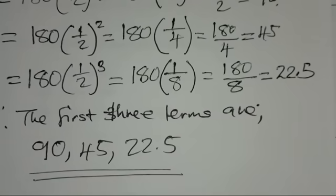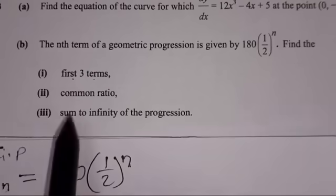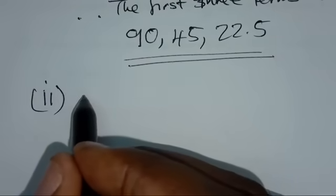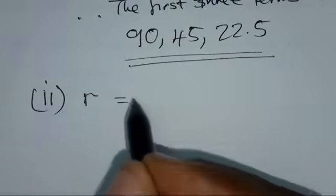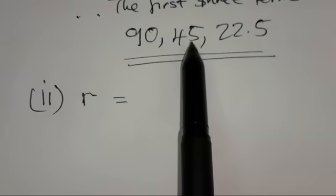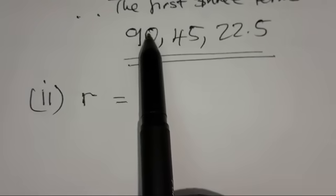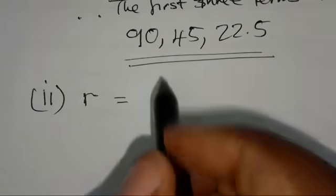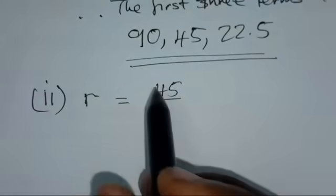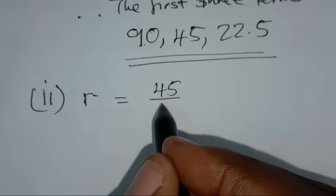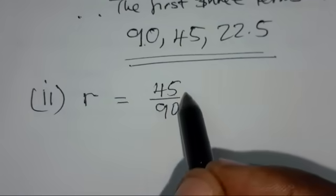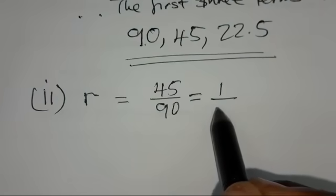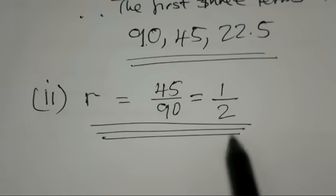The second part asks for the common ratio. The common ratio R is found by dividing the next term by the previous term: R equals 45 over 90. Simplifying, 45 into 45 is 1 and 45 into 90 is 2, so the common ratio is 1/2.